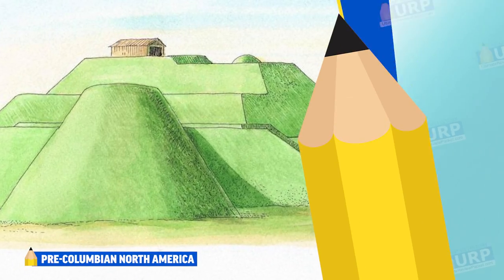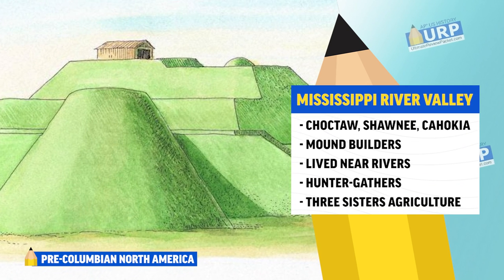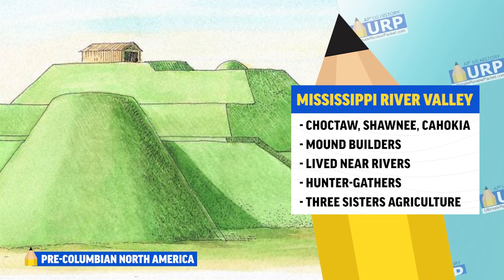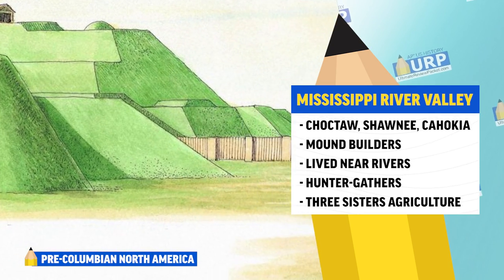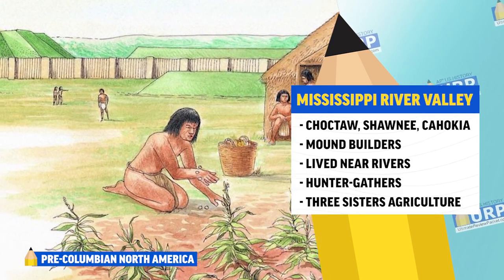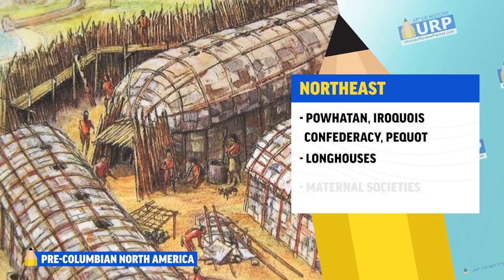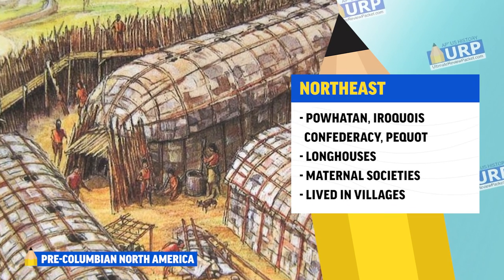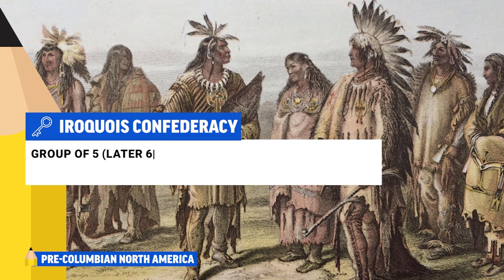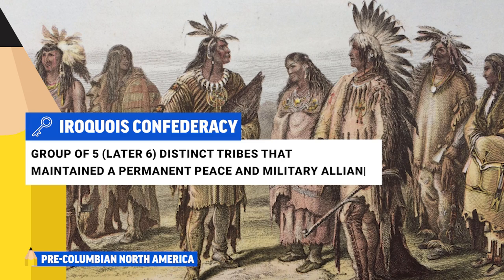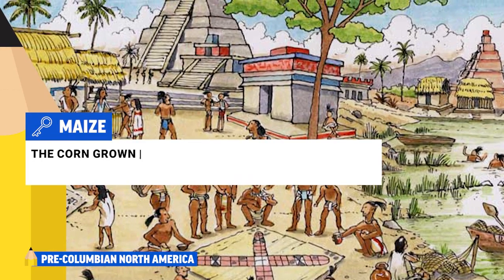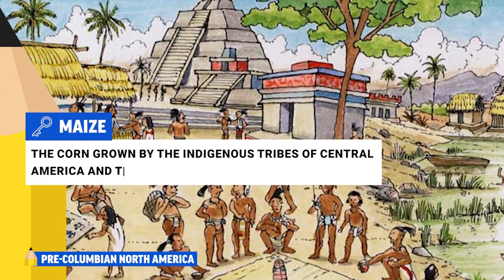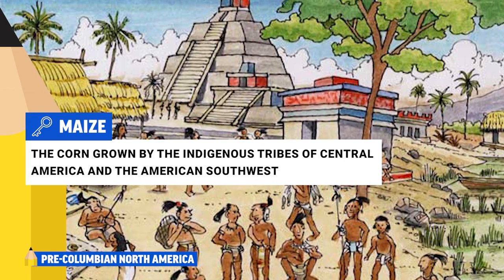Tribes like the Choctaw, Shawnee, and Cahokia lived in the Mississippi River Valley. Mississippians like Cahokia were known for building large earthen platform mounds, and developed theocratic village states near the river. They were hunter-gatherers but also used agriculture like Three Sisters Farming. Along the Atlantic coast and into the Northeast, Natives were traders, farmers, and hunters who built longhouses, lived in matrilineal societies, and lived in villages. These tribes included the Powhatan, the Iroquois Confederation, and the Pequot. Most Native American tribes were relatively small and semi-nomadic, but the spread of maize cultivation from present-day Mexico into the American Southwest caused populations to grow and civilizations to become more complex.